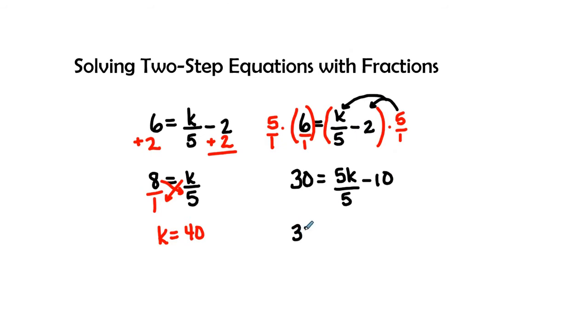So my next step is I'm going to go ahead and write 30 down. I'm going to simplify the 5 divided by 5 gives me k, and k minus 10. Let's go ahead and add the inverse because we're getting really used to this. I'm going to add 10 to both sides.